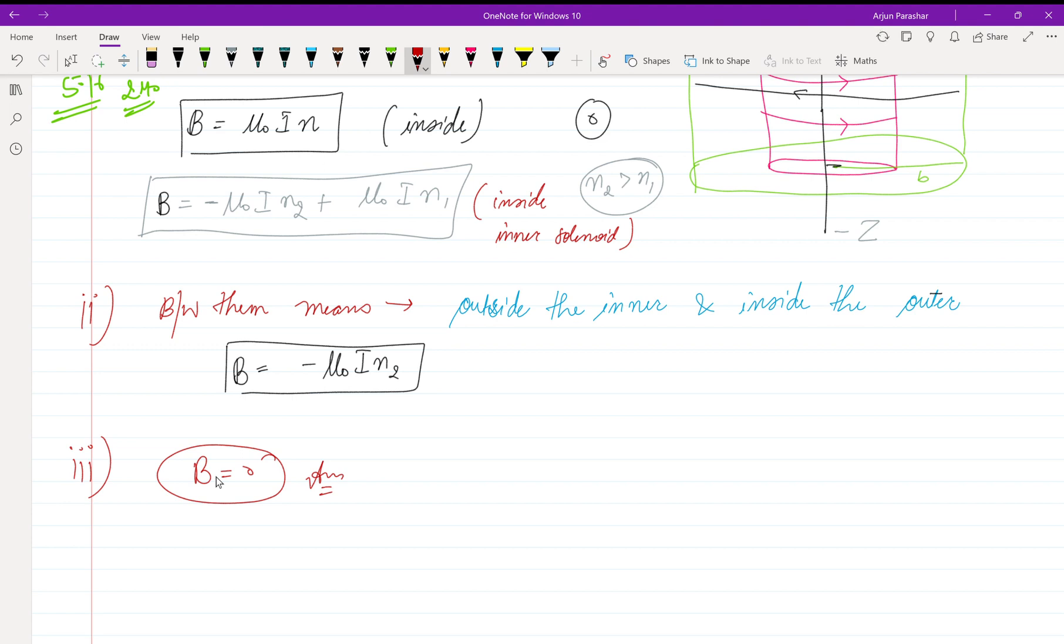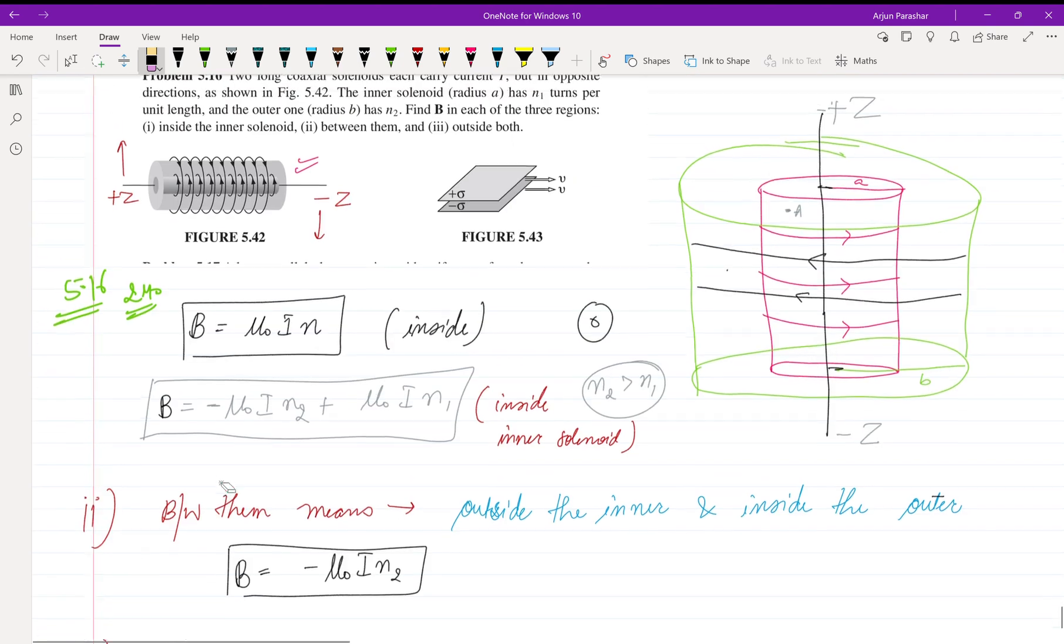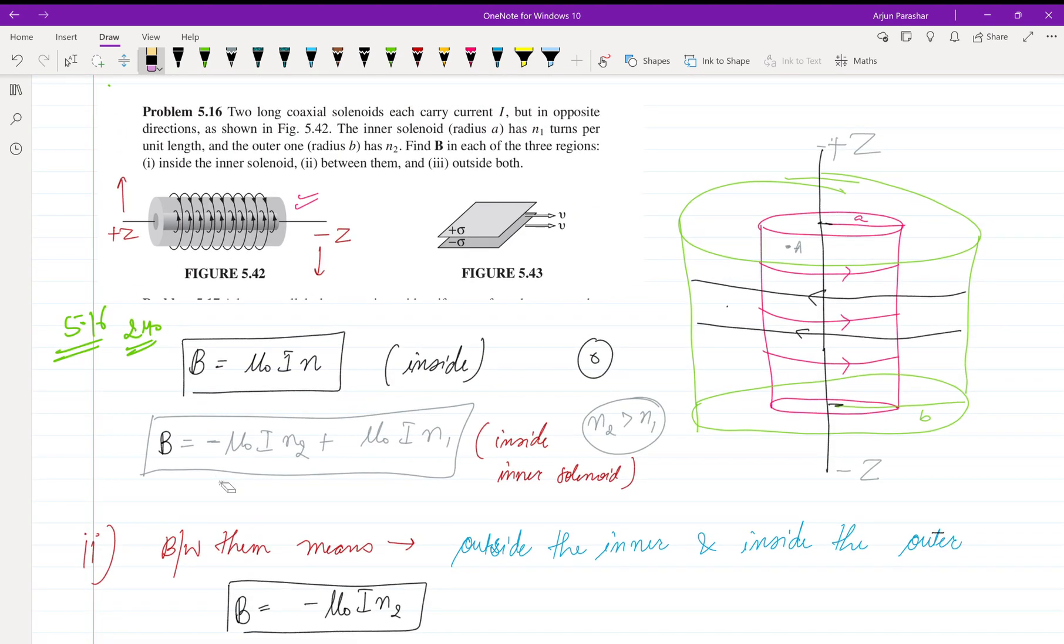Outside both, the magnetic field is zero. Or you can just mention ẑ and -ẑ instead of taking negative signs. The examiner will understand what you are trying to say. That's all for this video. See you next video, bye-bye, thank you.